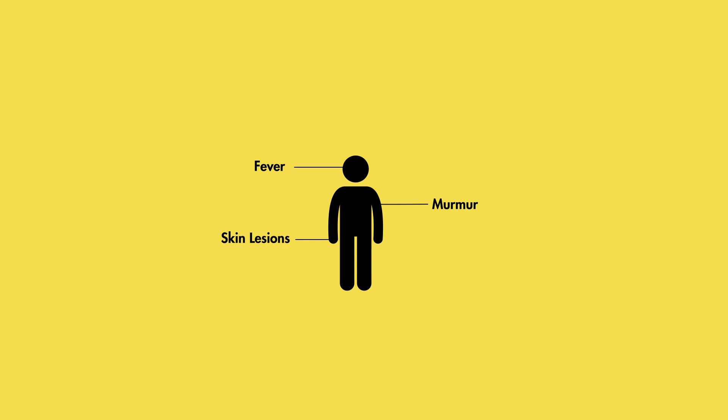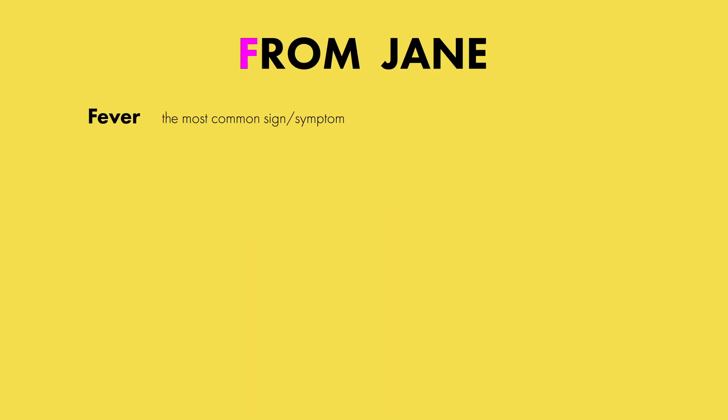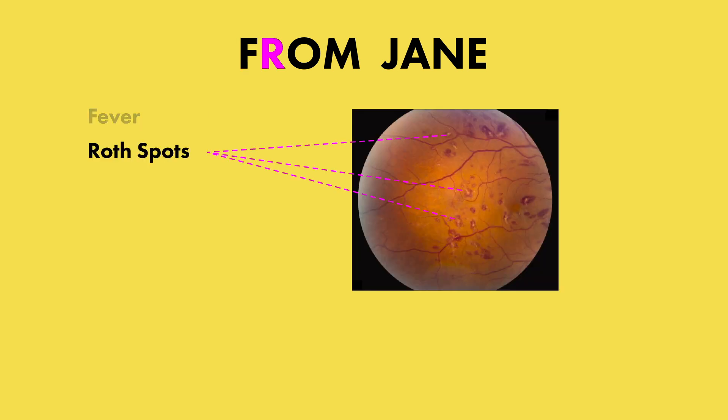A helpful way to remember the common signs and symptoms of infective endocarditis is the phrase FROM JANE. F stands for fever, the most common finding. R stands for Roth spots, which are white lesions surrounded by hemorrhage seen on fundoscopic exam.